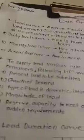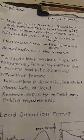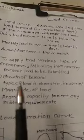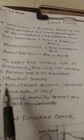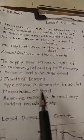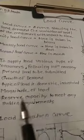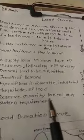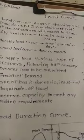This is the load curve. To supply various types of consumers, following information is necessary: present load to be submitted, growth of the demand, types of the load, that is domestic or industrial, magnitude of the load, and reserve capacity to meet any sudden requirement.